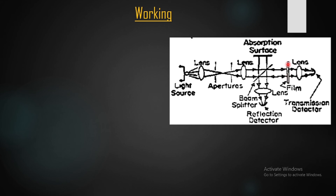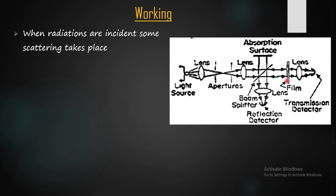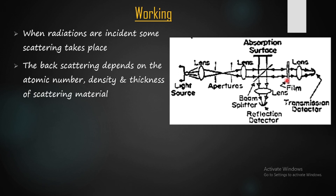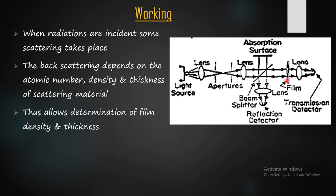When radiations are incident on a surface, some scattering takes place. The backscattering of beta rays depends on the atomic number, density, and thickness of the film. Measuring this backscattering allows determination of both the film density and the film thickness. This is the simple working principle of the radiation absorption technique, as evident from the beam photometer.